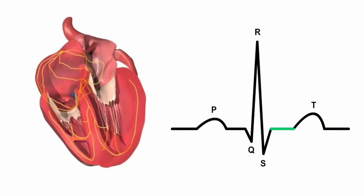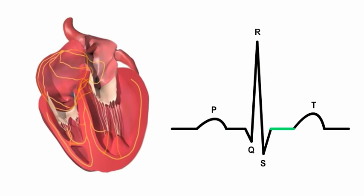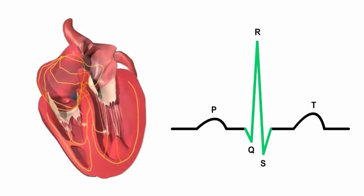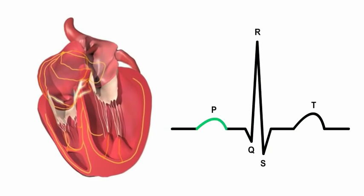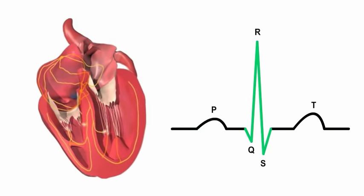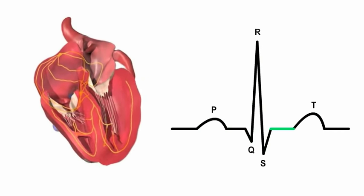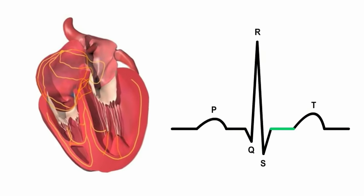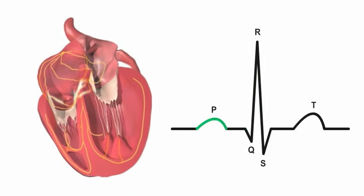The sequence of events just described and the associated ECG trace repeats with every heartbeat. Remember, an ECG is not a tracing of a single action potential, but an amalgamation of the many action potentials that constitute the electrical activity of the heart.